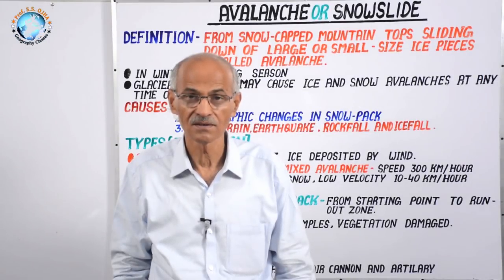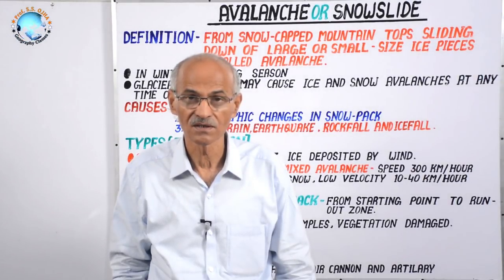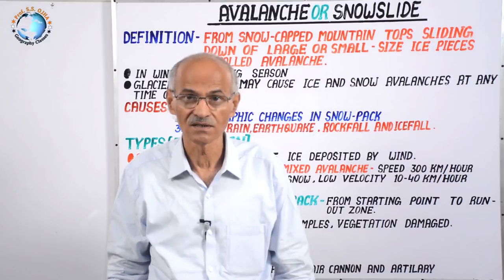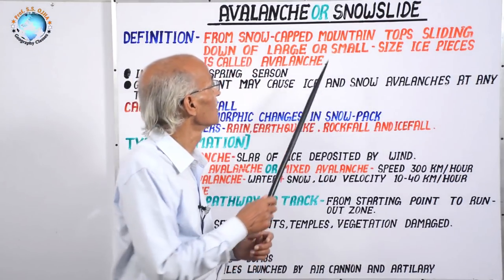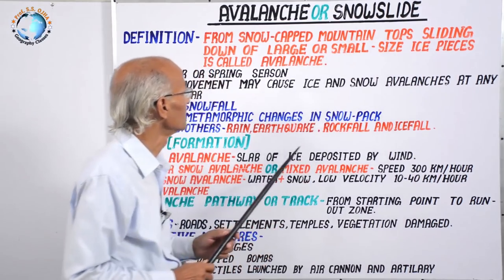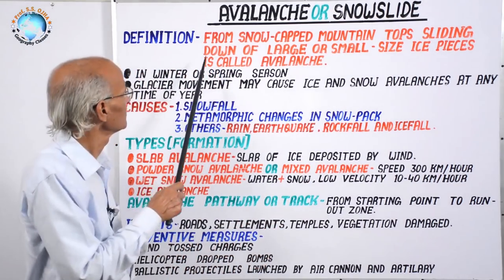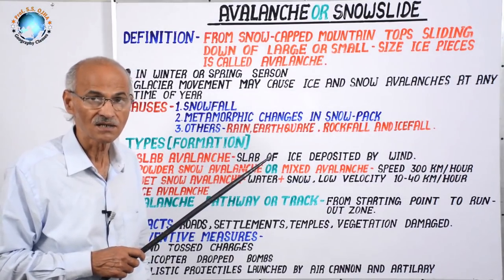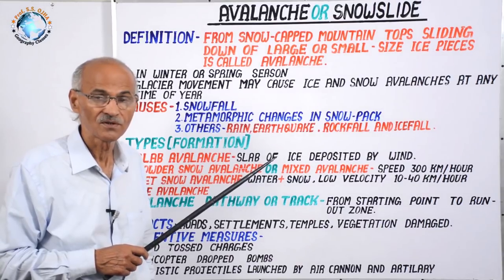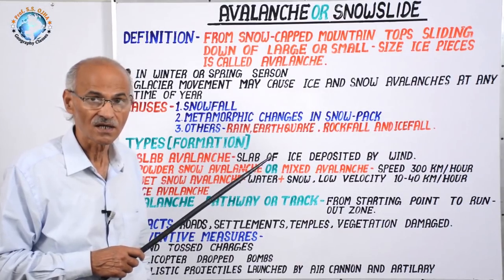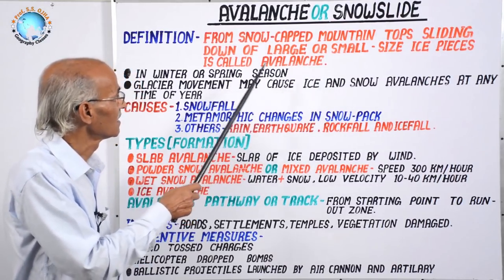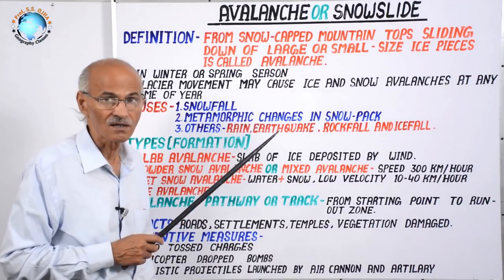Avalanche is a very important process in geomorphology and it causes heavy disaster in mountainous regions. Avalanche is also called snowslide. When a major or minor piece of ice slides down from snow-capped mountains according to slope due to gravity, it is called an ice slide, avalanche, or snowslide.